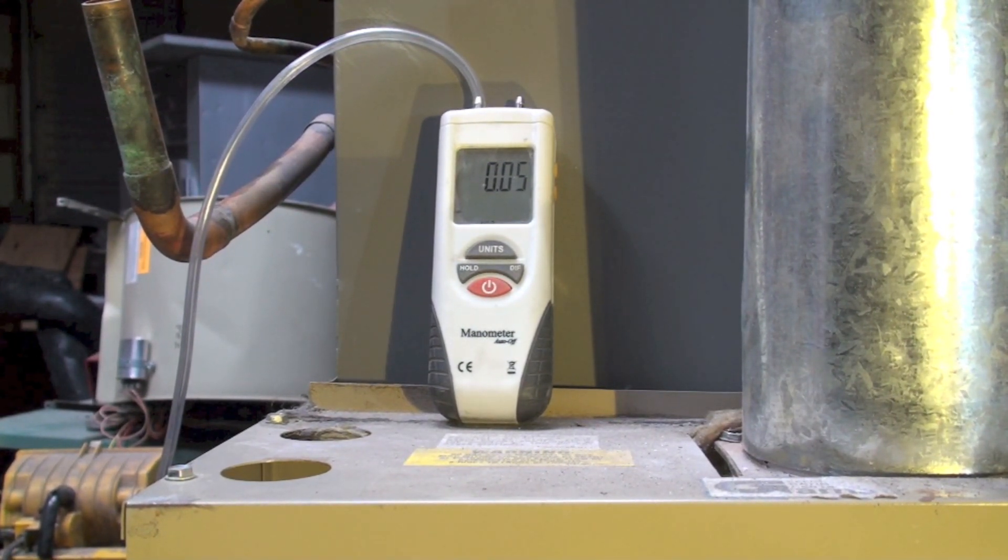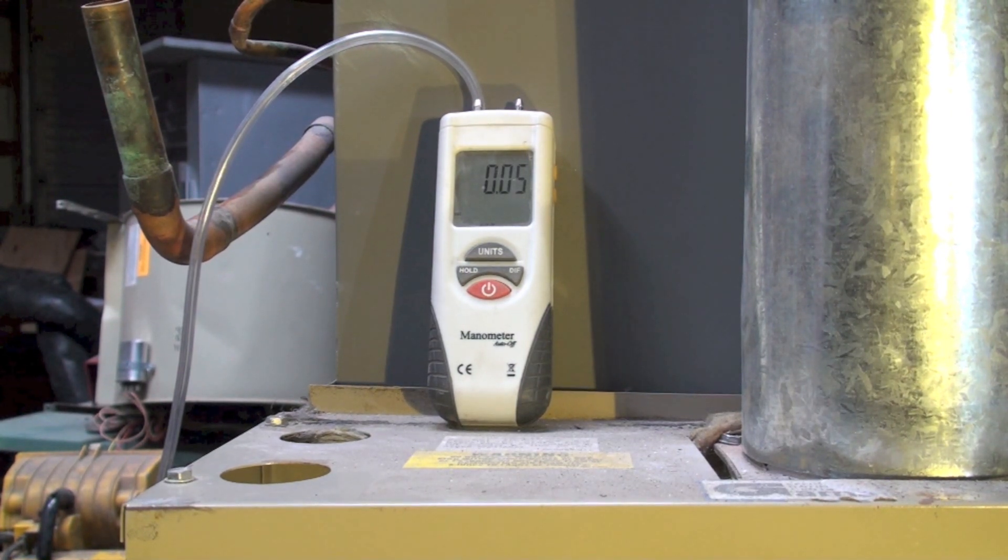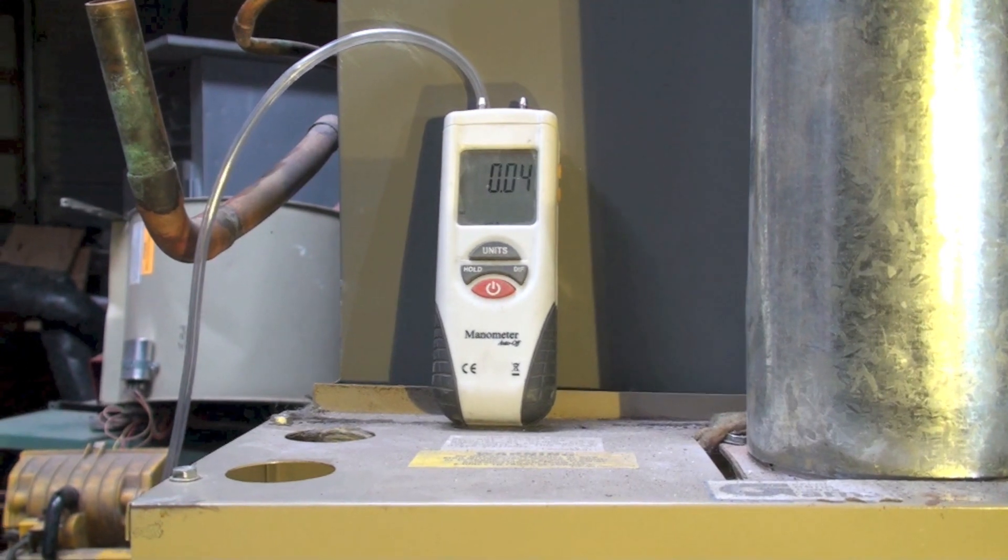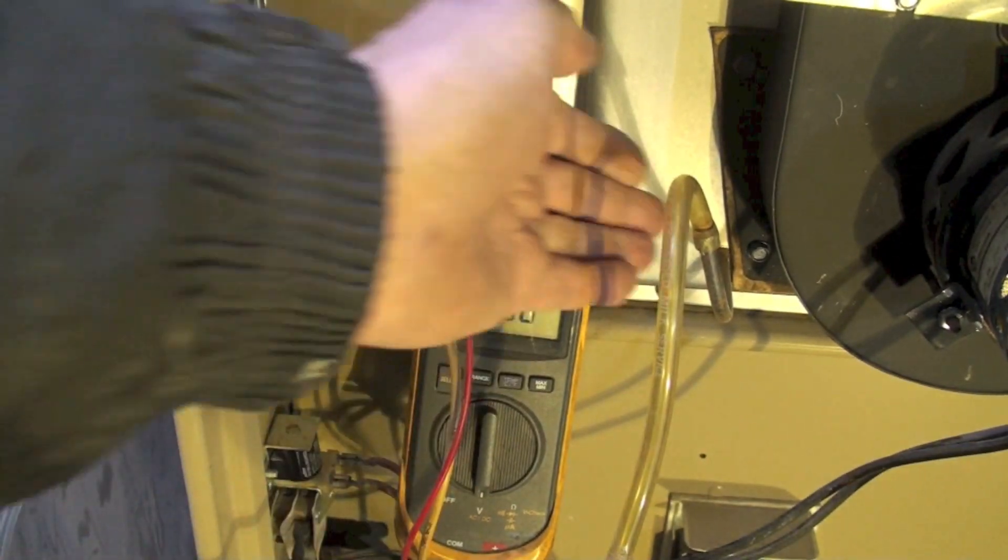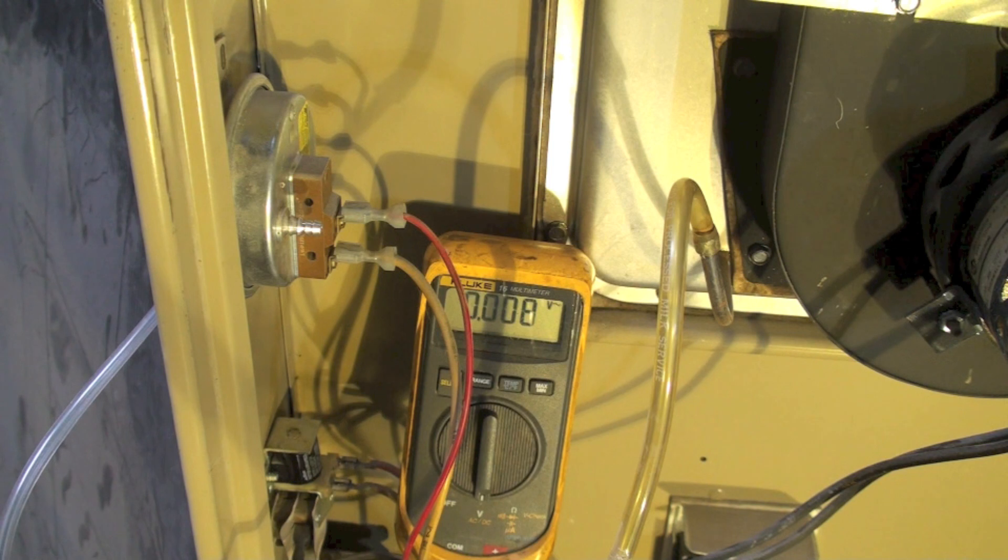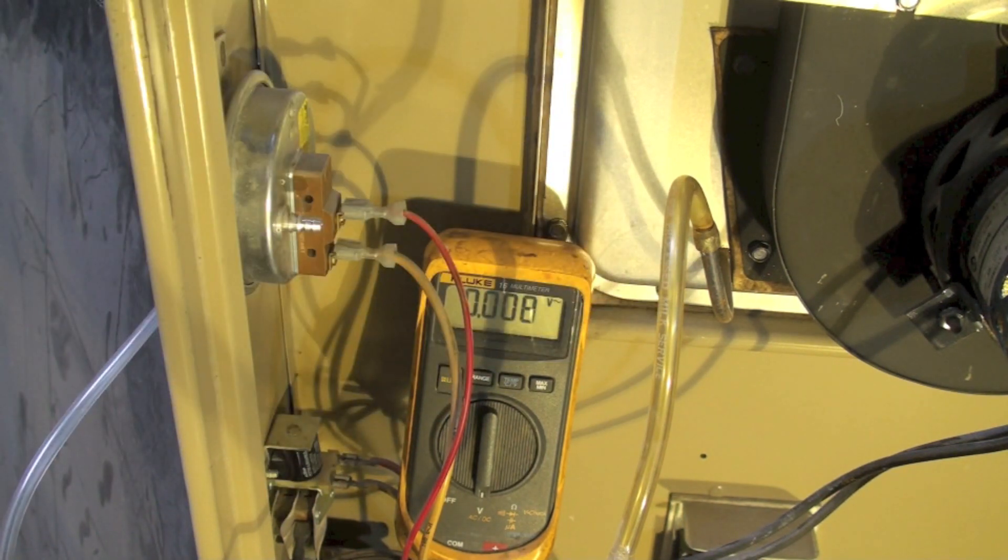Does that mean the pressure switch is bad? No, it means I got a blockage. Obviously the inducer is running. Could have a vent blockage, I could have a blockage here in the sensing tube, something like that. So I have a problem other than the pressure switch that's causing this. First I'd probably clear this tube out, maybe pull the inducer off and take a look at it and see what condition it's in. Remove the vent, see if it works with the vent removed, that sort of stuff.